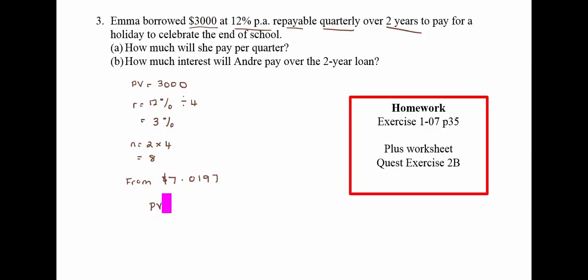So present value equals the number from the table times monthly, yearly amount. So what that is saying to me is the present value is now $3,000. The number from the table is $7.0197.